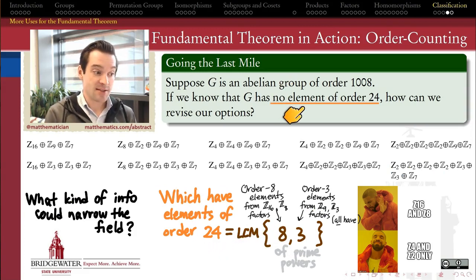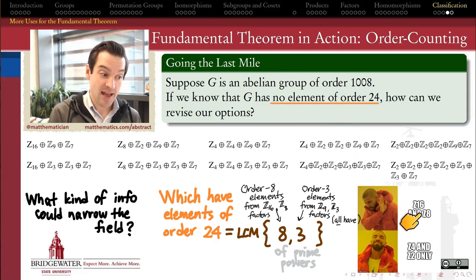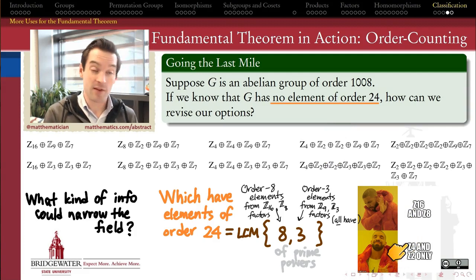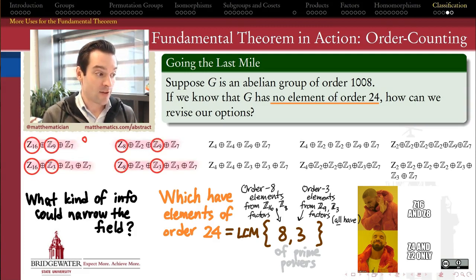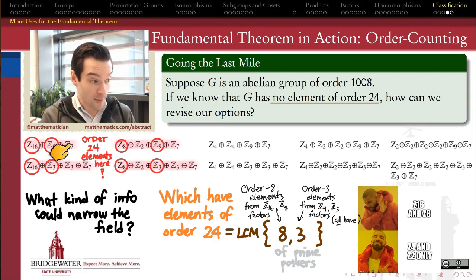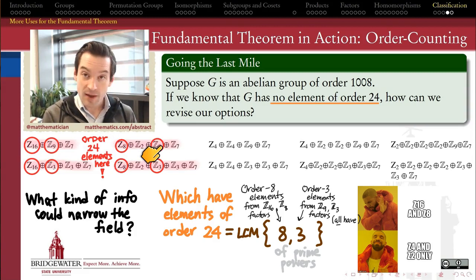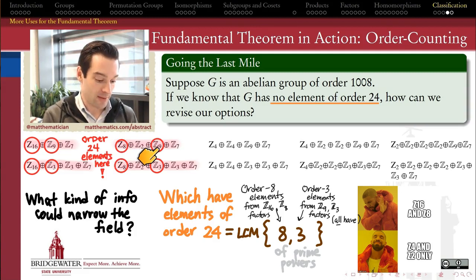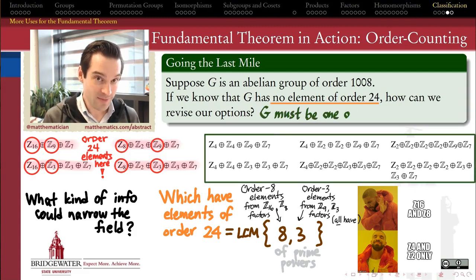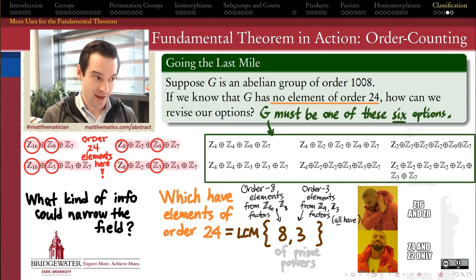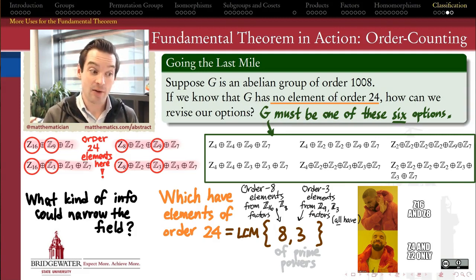So if I know that G is a group that doesn't have an element of order 24, then it's got to be one of the options that doesn't have a Z16 or a Z8, but is only built out of prime power orders Z4 and Z2 on the prime 2 side. This lets me rule out those four possibilities, because those four possibilities all have elements of order 24. For example, one of them is going to have an element of order 24 coming from the generator of its Z8 and the element of order 3 — say the element 3 — inside the Z9 factor. Those two together combine to give an element of order 24. But for all the other possibilities, there is no way to get 24 as the order of one of the elements. Therefore, knowing that G does not have an element of order 24 narrows my universe from 10 options down to 6 options.